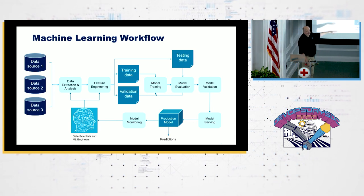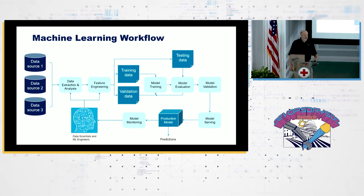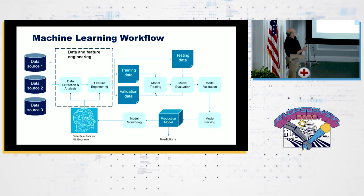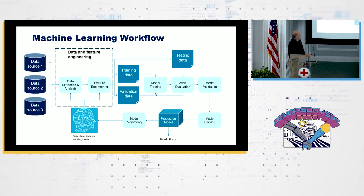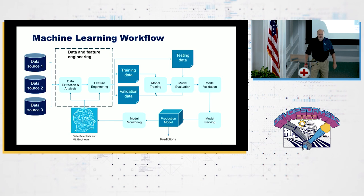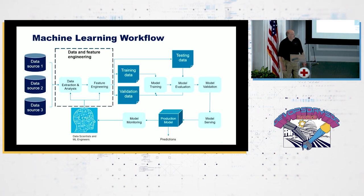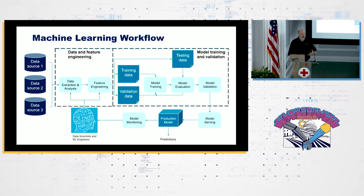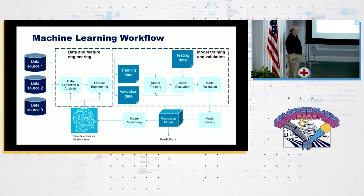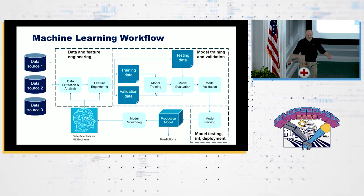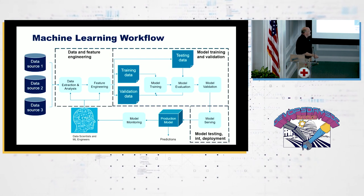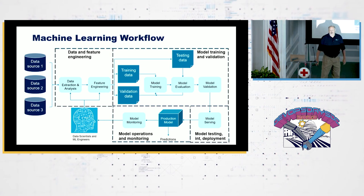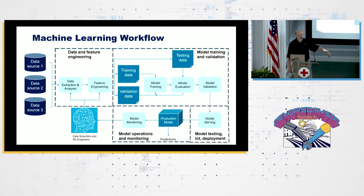I like to break these eight steps into four distinct areas from a deployment and delivery perspective. First is the data and feature engineering process, usually done by data scientists and ML engineers. Second is training and validation — figuring out what model makes sense and what's most accurate. Third is our deployment process: testing, integration, and deployment of our models into production. And last is model operations and monitoring as our model is in production doing things from a business perspective.